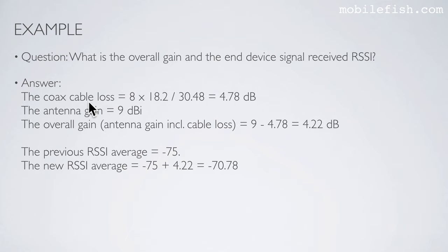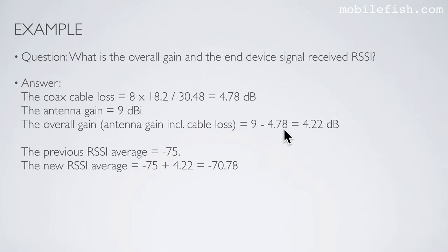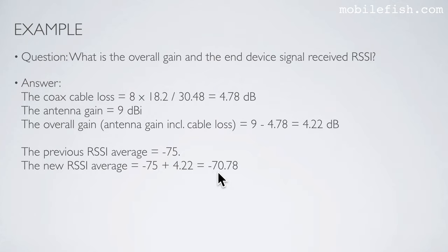Here's the answer. The coax cable loss: the cable is 8 meters and the RG58-U attenuation is 18.2 dB for every 30.48 meters, so the coax cable loss is 4.78 dB. The antenna gain is 9 dBi, so the overall gain — antenna gain including cable loss — is 9 minus 4.78, which is 4.22 dB. The previous RSSI average was minus 75, so the new RSSI average is minus 75 plus 4.22 dB, which is minus 70.78.